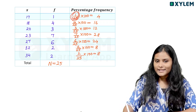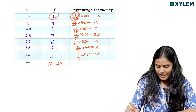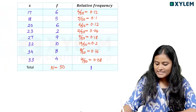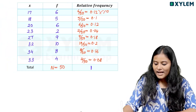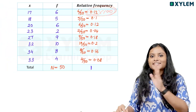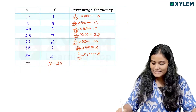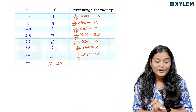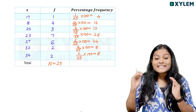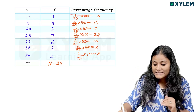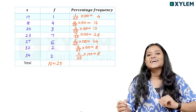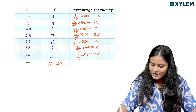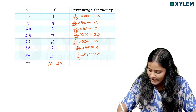This is one of the most important things: given frequency divided by total frequency, multiplied by 100 — that is the percentage frequency table. The sum of percentage frequencies equals 100.